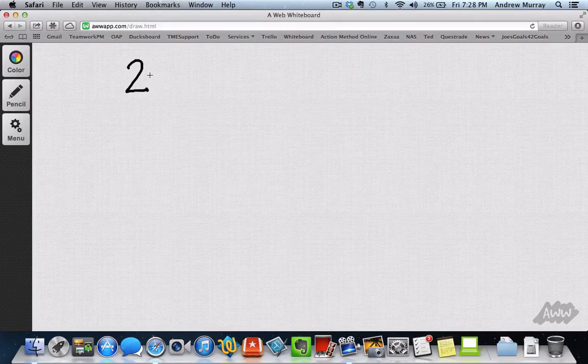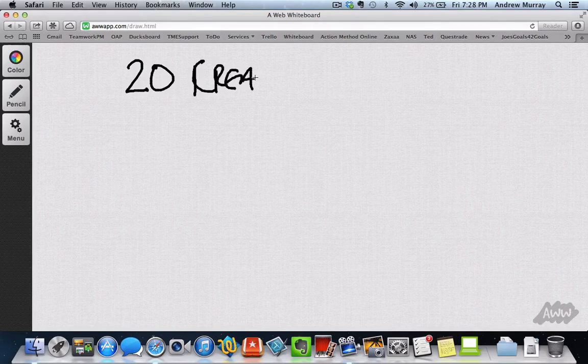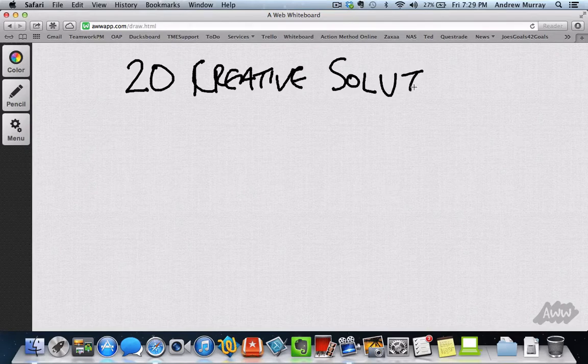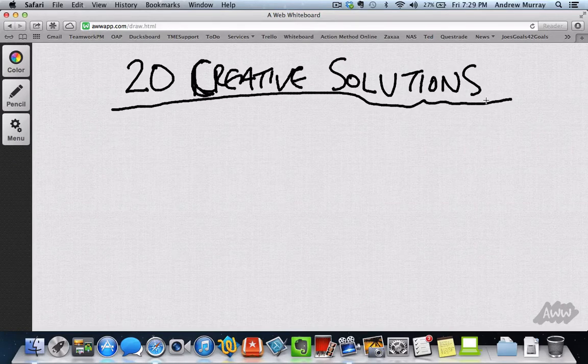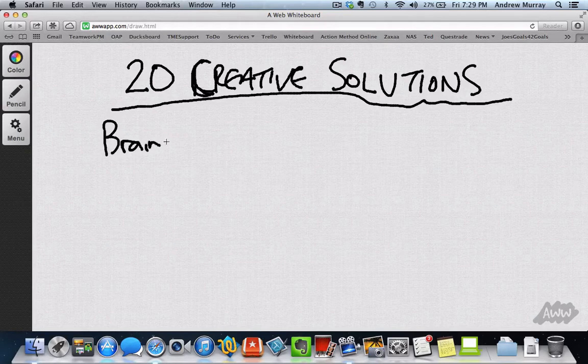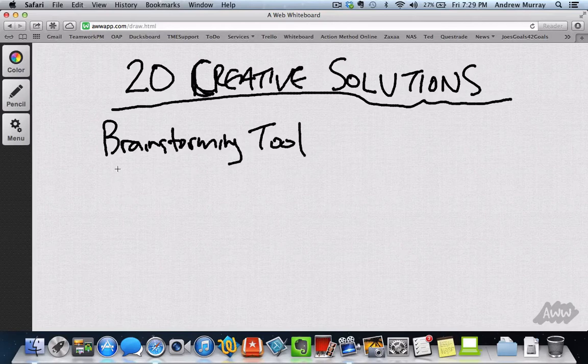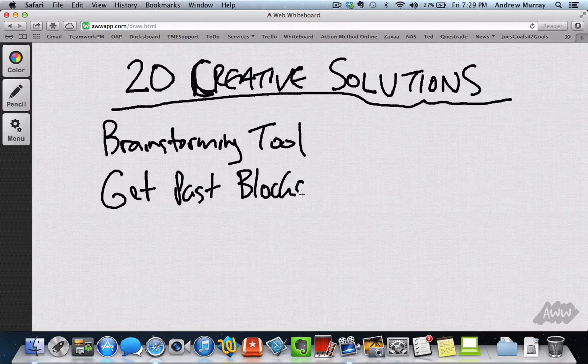All right. So what we're going to talk about here is a very powerful training called the 20 Creative Solutions. So what are the 20 creative solutions? How does that work? Well, let's start with this. When Andrew and I first started out online, one of the exercises that we did was this 20 creative solutions, and really what this is is a brainstorming tool. It's a tool to help you figure out what is going on in your business, what the potential problems may be, and what it does is it really helps you to determine and identify what you need to get your business going.